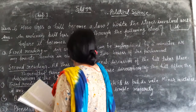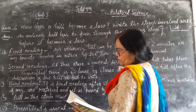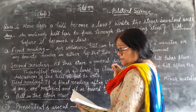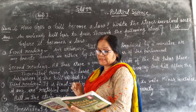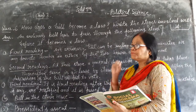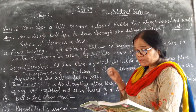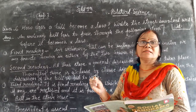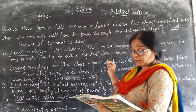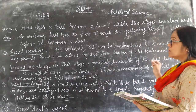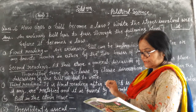After the general discussion, a clause by clause discussion of the bill takes place. Those in favor of the bill argue why it should be accepted, while those opposed to it point out its weaknesses and flaws. After the discussion, the bill is put to vote.